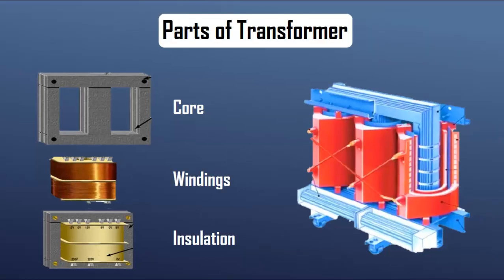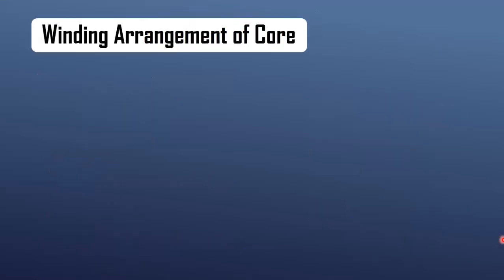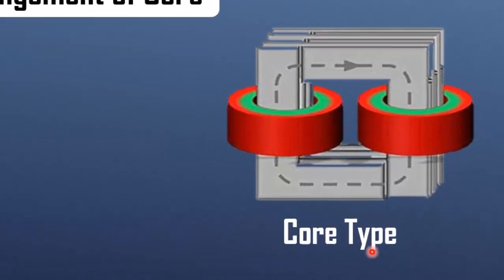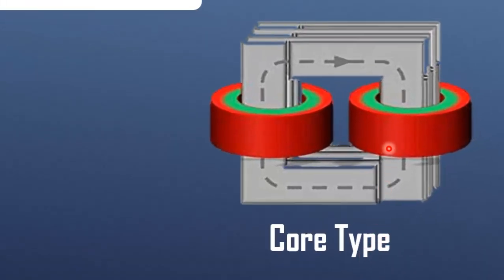Before directly going on to understand eddy current loss, let's have a brief look at arrangement of windings on transformer core. In a core-type transformer, the windings are placed around two vertical limbs of a rectangular core. The magnetic flux mainly flows through the core's two limbs.